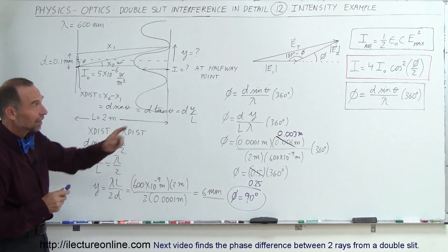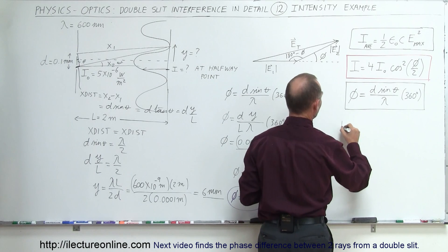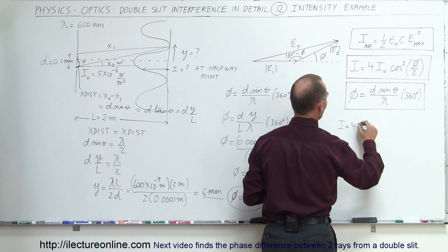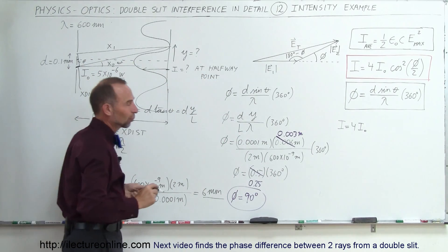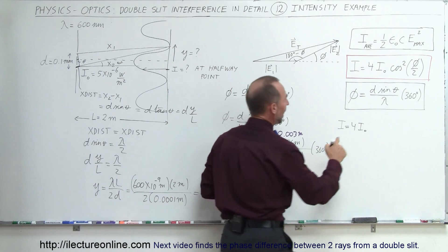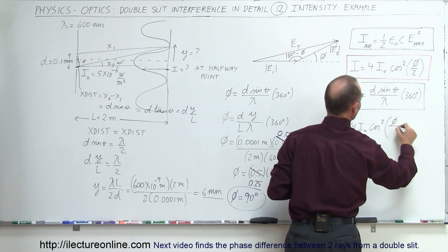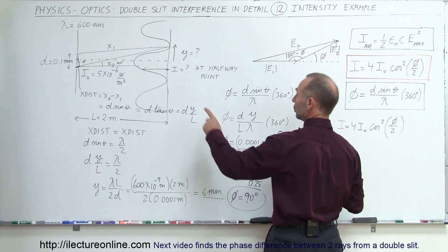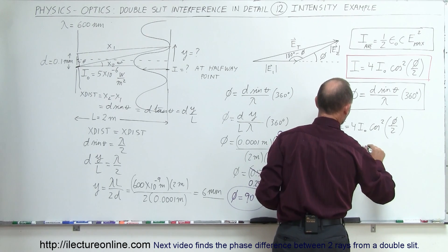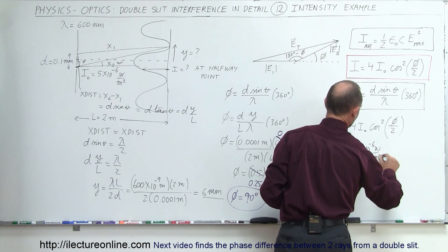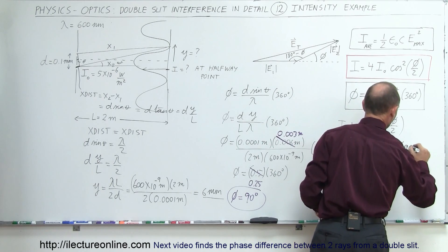Now that we have the phase difference, we can find the intensity using the equation in the red box. The intensity equals 4 times the original intensity of a single beam — given as 5 times 10 to the minus 6 watts per square meter — multiplied by the cosine squared of phi divided by 2. So this equals 4 times 5 times 10 to the minus 6 watts per square meter, times the cosine squared of 90 degrees divided by 2.